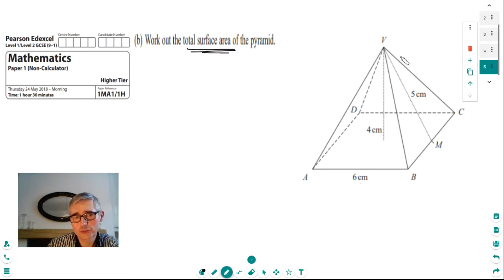So because it's a square pyramid, I'm going to work out the base first of all. So the base is a six by six square, and to find the area of that, we're going to multiply the sixes together. And the area is 36 centimetres squared.